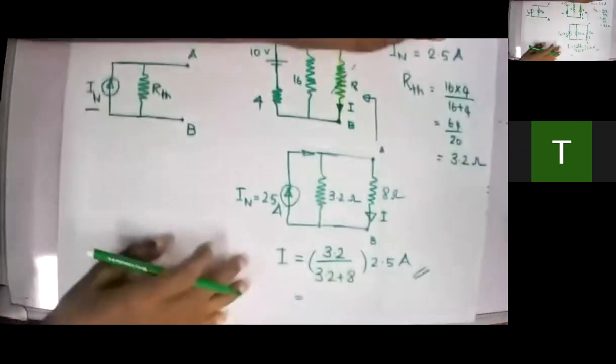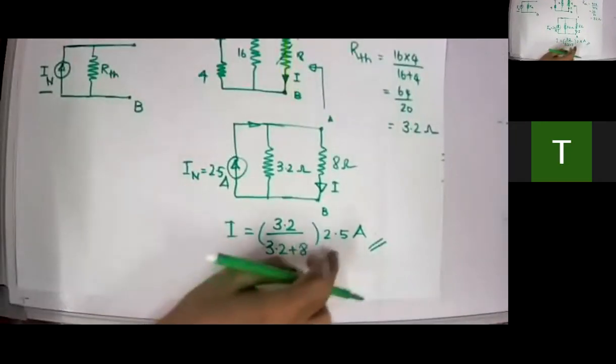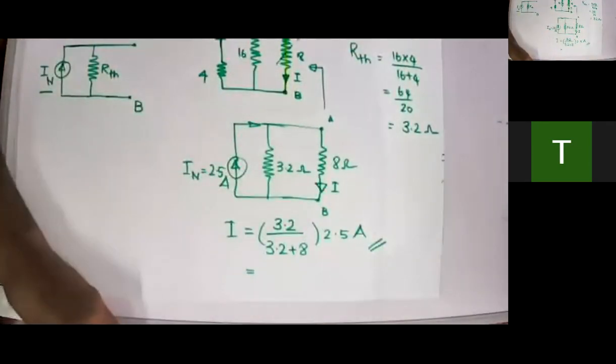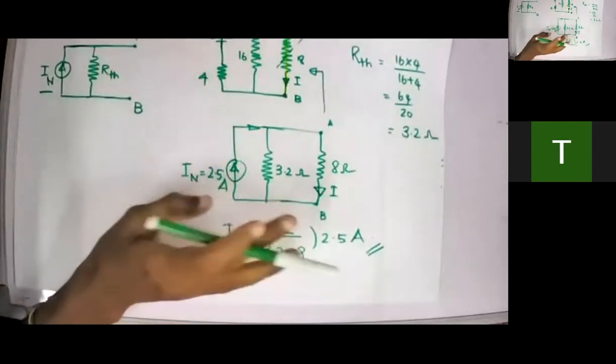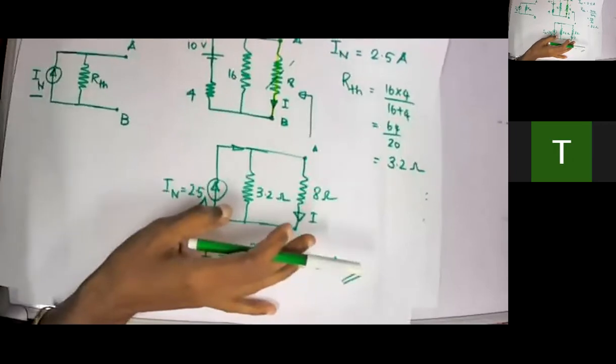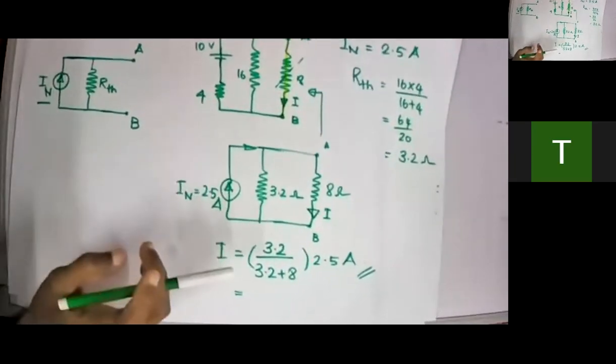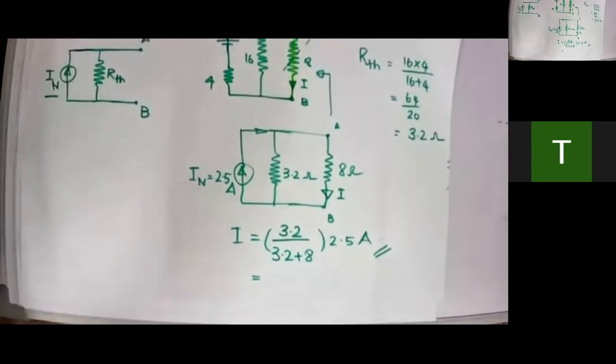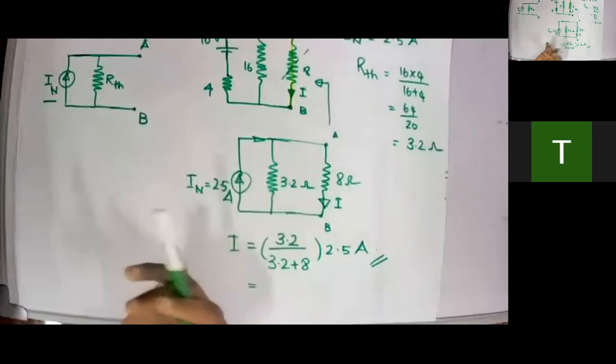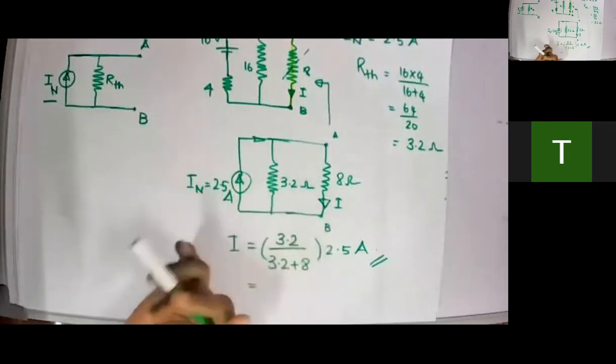This is how Norton's theorem simplifies a complex circuit. With Norton's theorem, your first chapter is over. We have covered voltage, current, Ohm's law, Kirchhoff's current law, Kirchhoff's voltage law, superposition theorem, Thevenin's theorem, and Norton's theorem. Now we'll try another couple of examples using Norton's theorem.